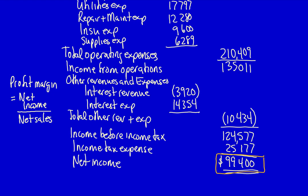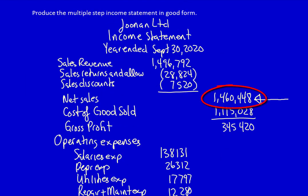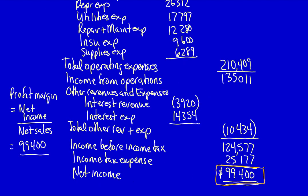We have net income of $99,400. For net sales, we have to go a little higher to find $1,460,448. Note that we're using net sales — we have to take away the sales returns and allowances and sales discounts because they reduce revenue. If we calculate that out, it equals 6.8%. This shows that the company generated almost 7 cents of profit for every $1 of net sales.